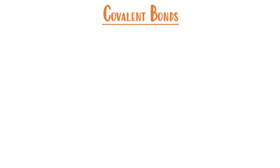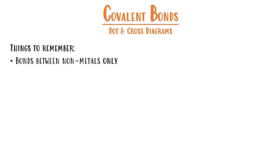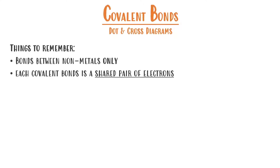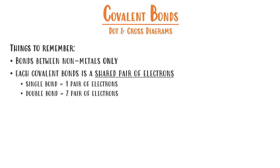In this video we'll be looking at covalent bonds, in particular how to draw dots and cross diagrams. These bonds only occur between non-metals and we find them on the right hand side of our periodic tables. Each covalent bond counts as one shared pair of electrons, which means one covalent bond is one pair of electrons and two covalent bonds is two pairs of electrons, meaning there's four electrons in total.